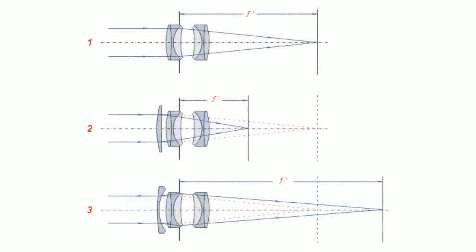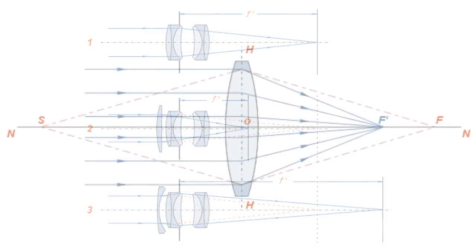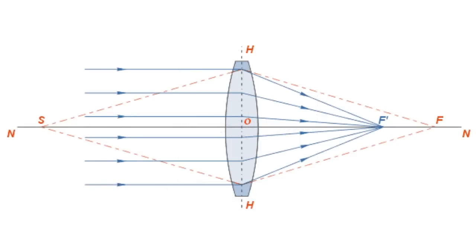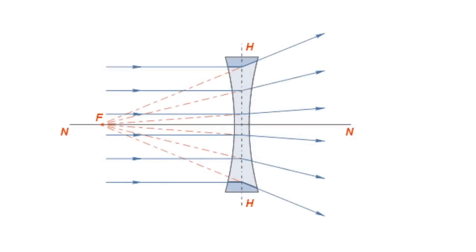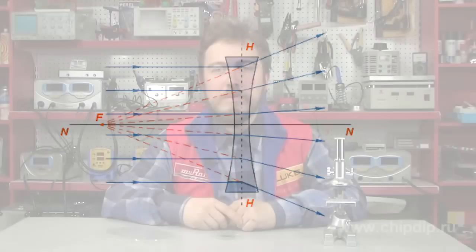All lenses, whether focusing or divergent, have a certain focal power. This is a very important parameter. The value is positive for focusing lenses and negative for divergent ones. Shortsightedness requires glasses with divergent lenses. Farsightedness, on the contrary, requires focusing lenses.